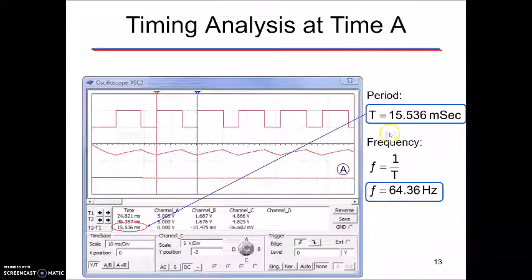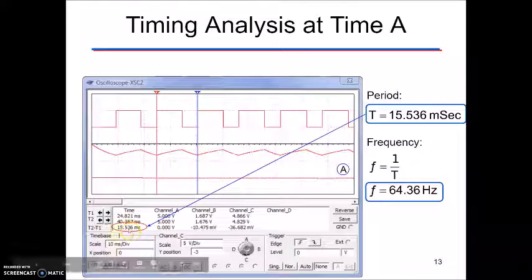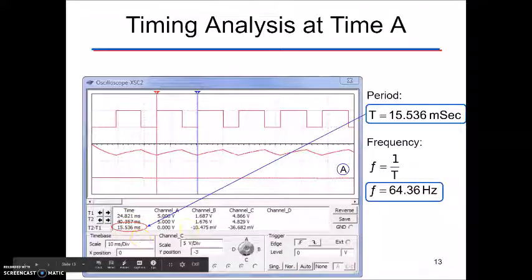So looking at time A, you can see we've adjusted our markers here, one and two, to frame out a portion of our wave. We're looking at 15.53 microseconds over here and then our frequency is again going to be 64.36 hertz.